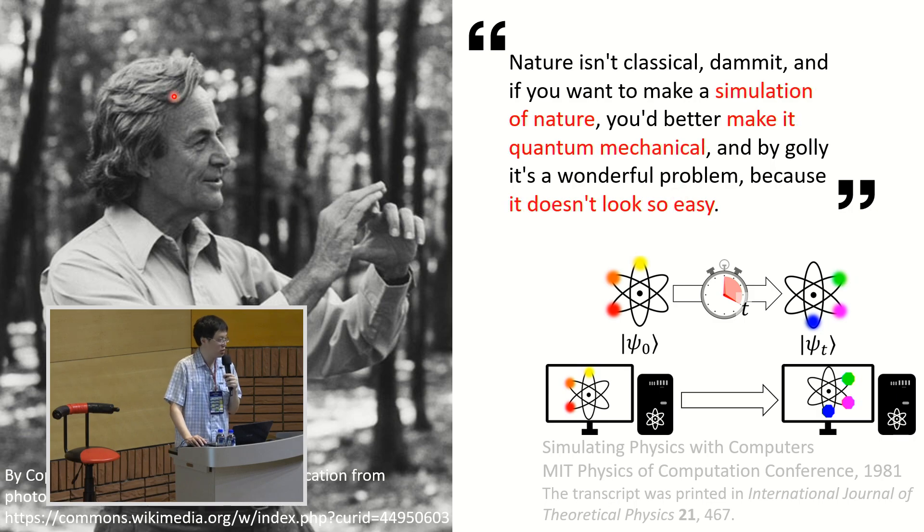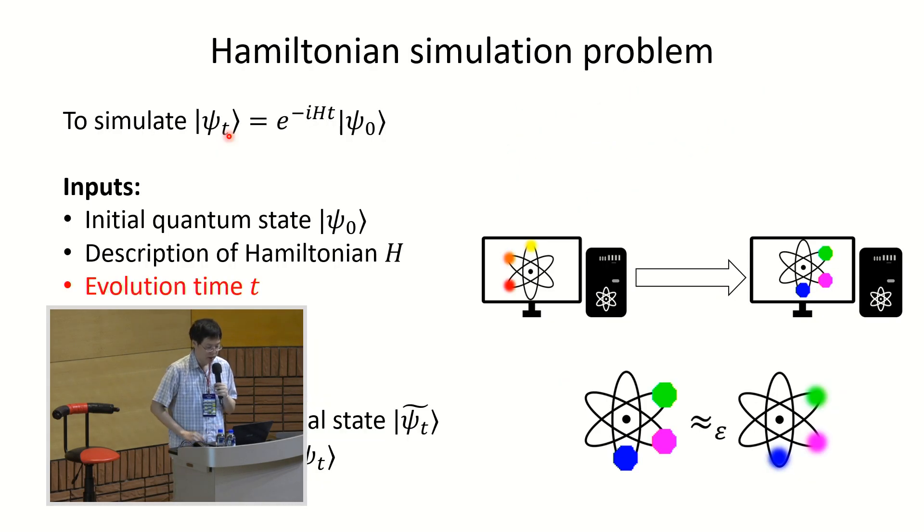But he had a great intuition that nature can simulate itself because nature just goes in time, in linear time. The nature doesn't require exponential time to be in nature. So if you want to simulate nature efficiently, then maybe we can simulate it with quantum mechanics also. So he had an idea about quantum computers before we have quantum computers.